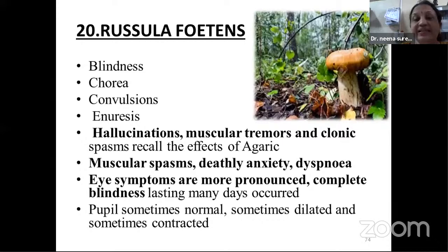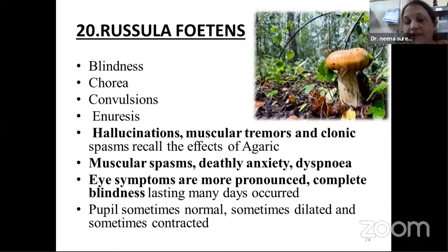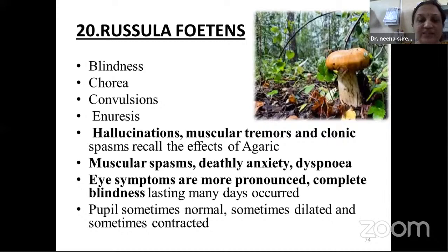Twentieth: Russula fetans — indication in blindness. Fetans means very offensive or putrid nature of discharges. Features include blindness, chorea, convulsions, enuresis, hallucinations, muscular tremor, clonic spasm, deathly anxiety, dyspnea. Eye symptoms pronounced — complete blindness lasting for many days. Pupils sometimes normal, sometimes dilated, sometimes contracted — that changeability is characteristic.